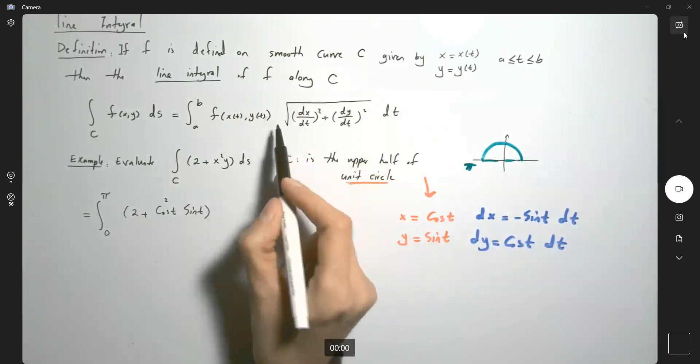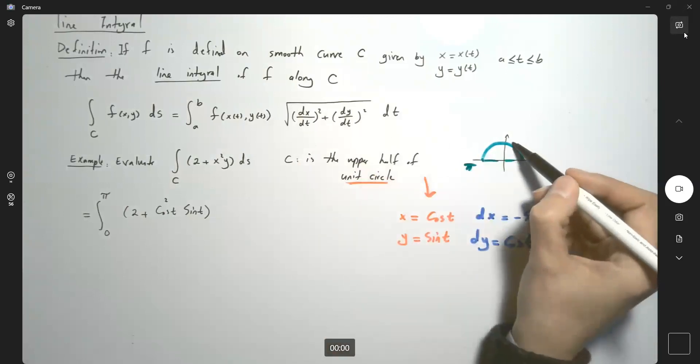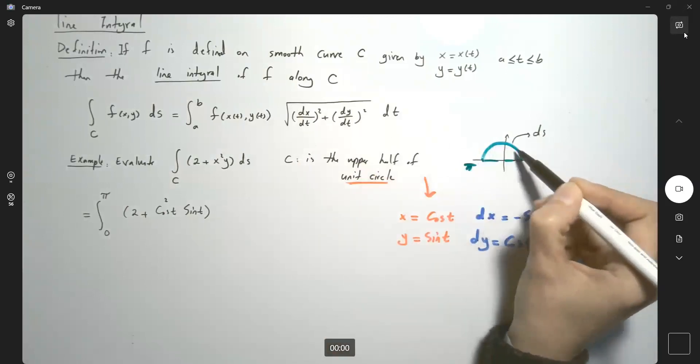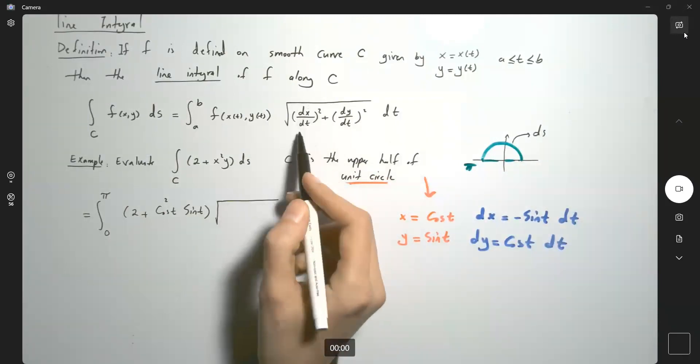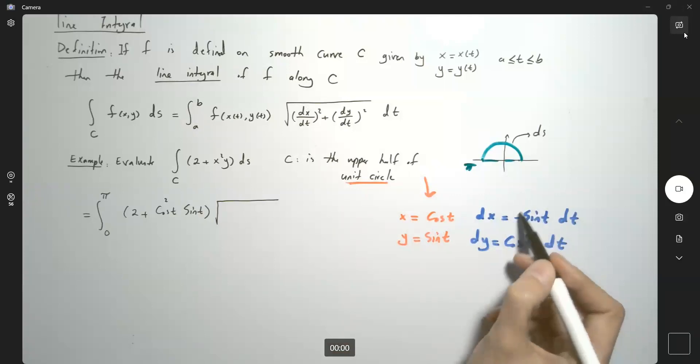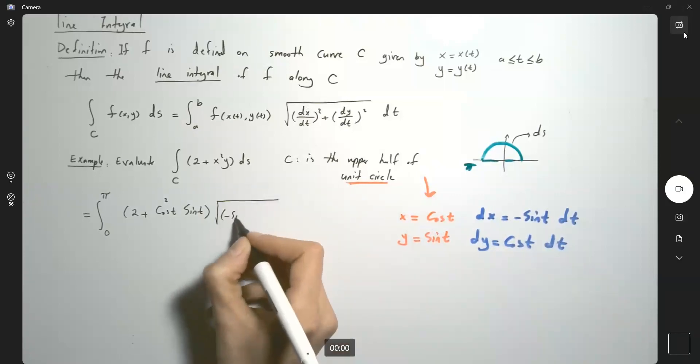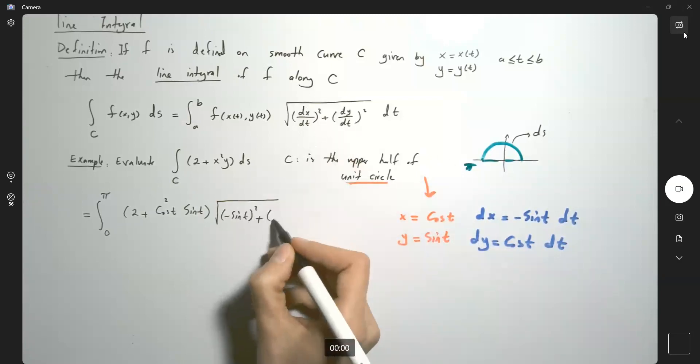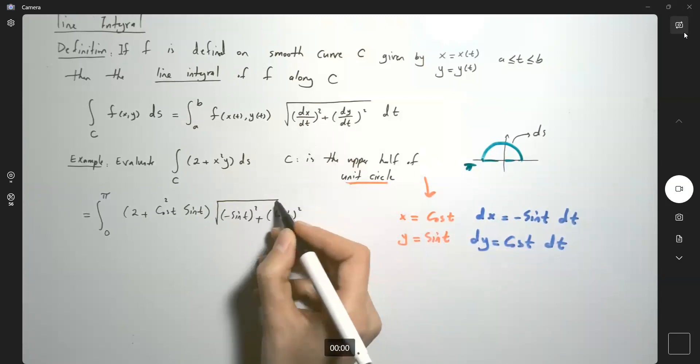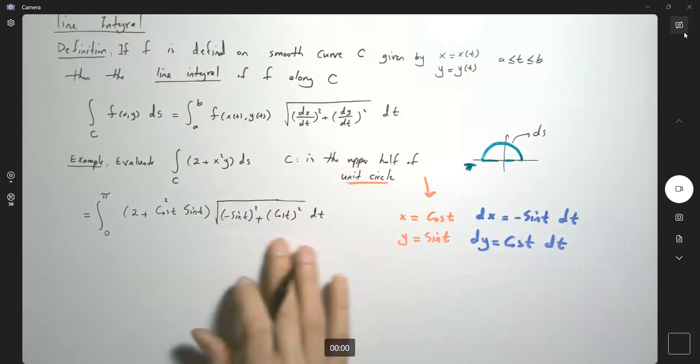ds is the length element of the curve, which is the square root of (dx/dt)² plus (dy/dt)²—that's negative sine t squared plus cosine t squared—times dt. But from pre-calculus, this simplifies to one.